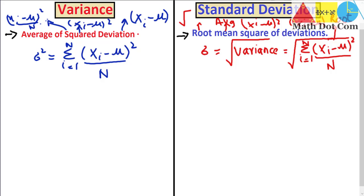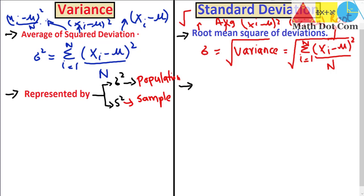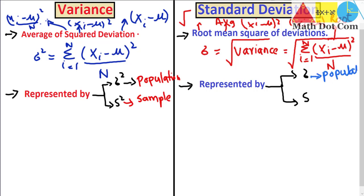Now let's see how they differ in terms of representation or symbols. Variance is represented by two symbols: sigma squared for the population, and s squared for the sample. When finding the variance of a sample, replace sigma squared with s squared; for population, use sigma squared. Standard deviation is also represented by two symbols: sigma for population and s for sample — because taking the square root of variance cancels the square, giving us sigma and s. Also, replace mu with x-bar when representing the sample; use mu for population in both cases.